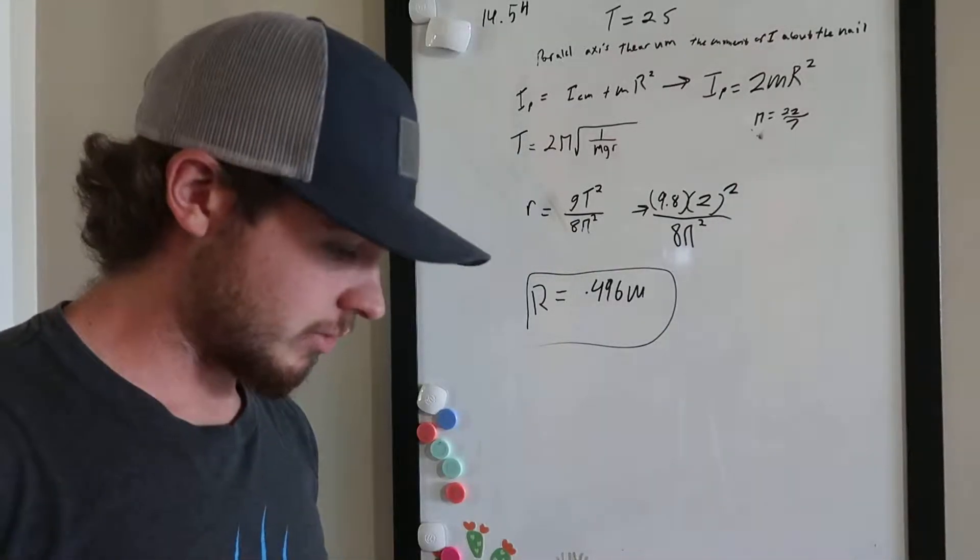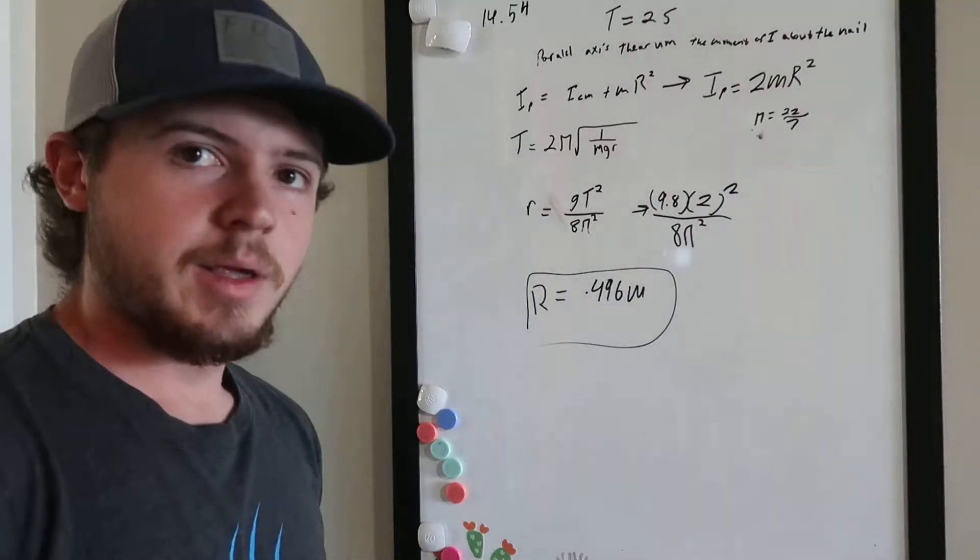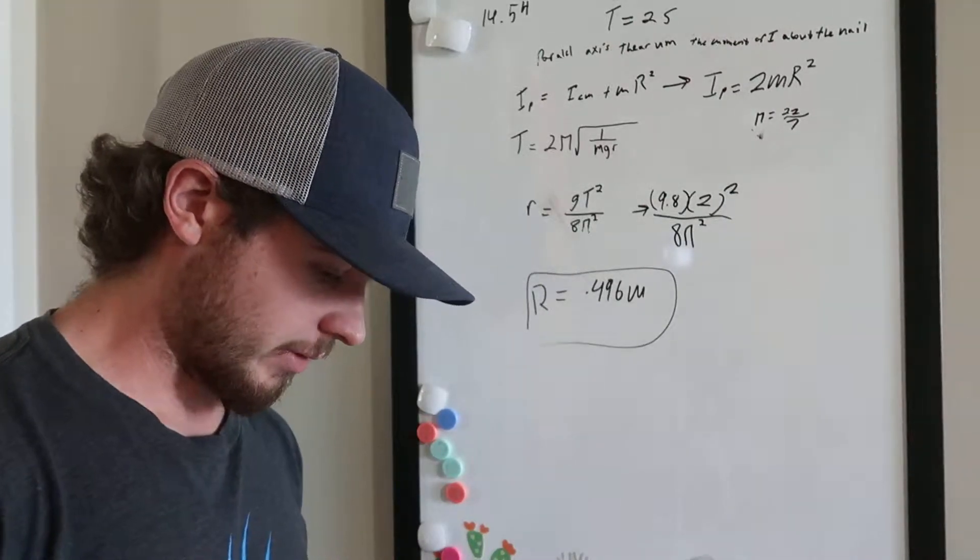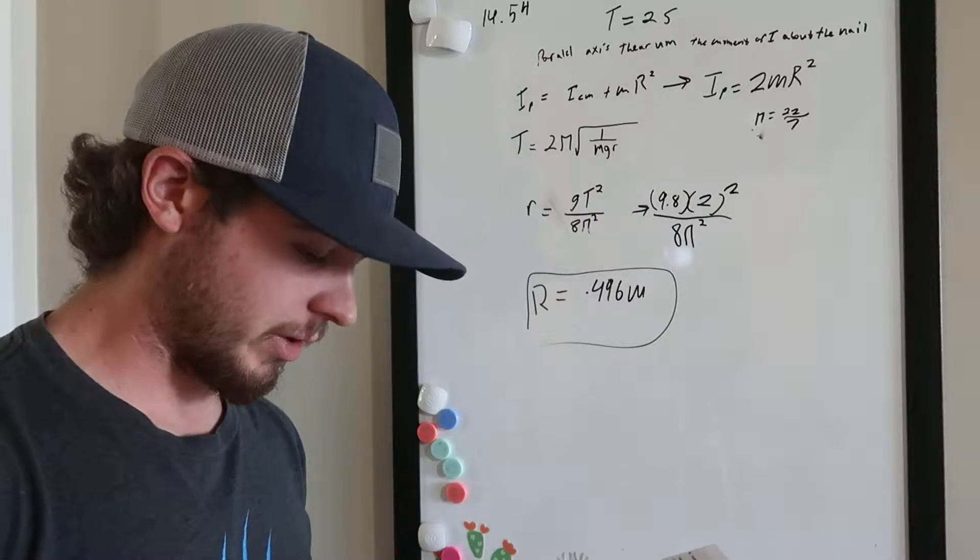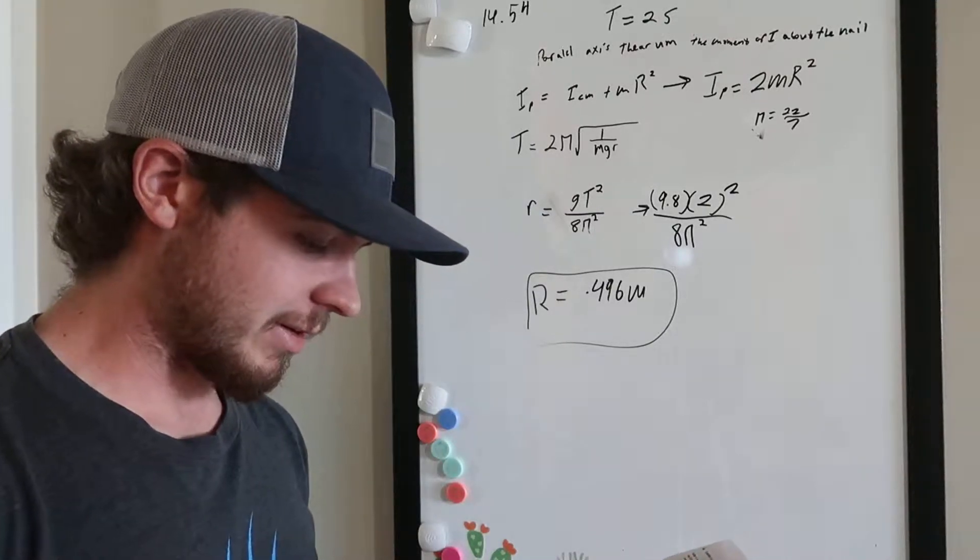Okay, so we're looking at question 54 from chapter 14. It says we want to hang a thin hoop on a horizontal nail and have the hoop make one complete small angle oscillation each two seconds.